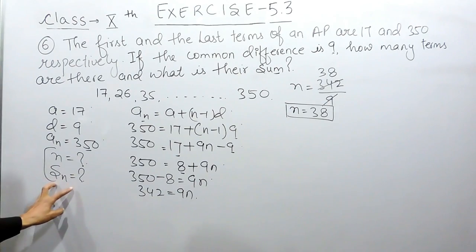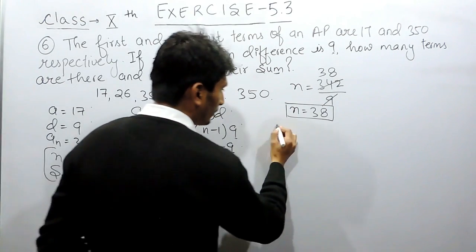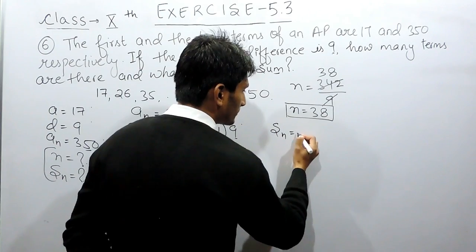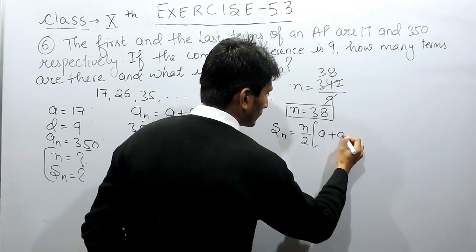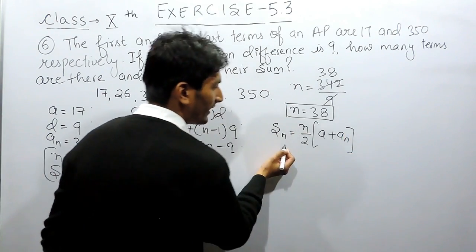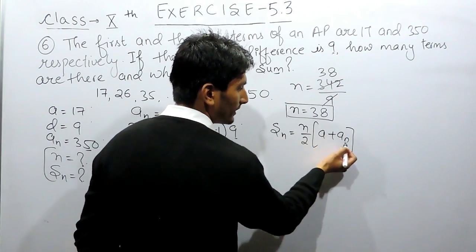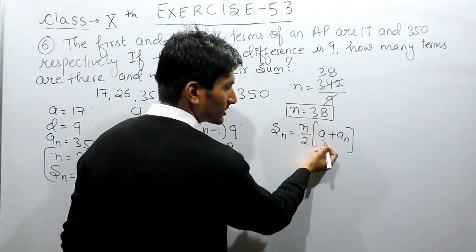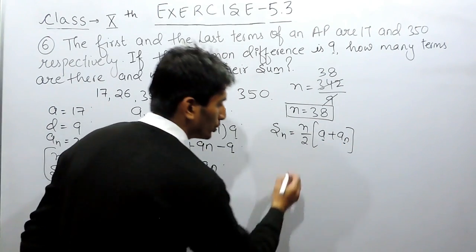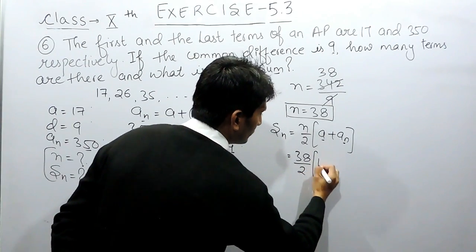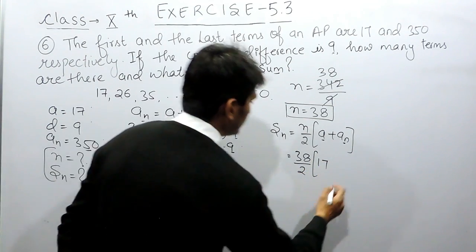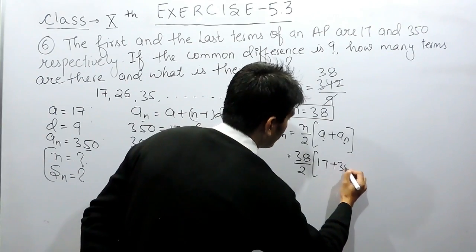Now, you have to find the sum of these terms. So, to find out the sum of these terms, we have a formula that the sum of n terms is equals to n by 2, A plus An, where the first term and the last term is given to you. So, the number of terms here are 38 divided by 2. The first term is 17 and the last term is 350.